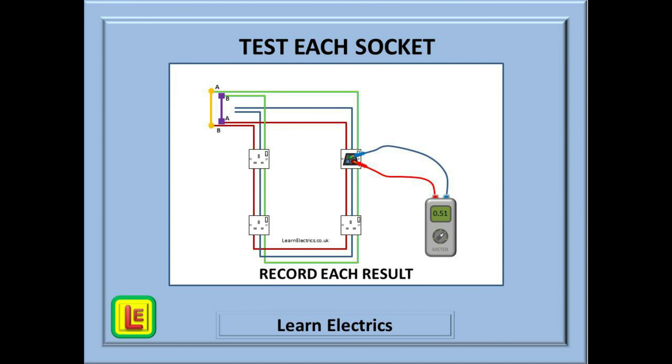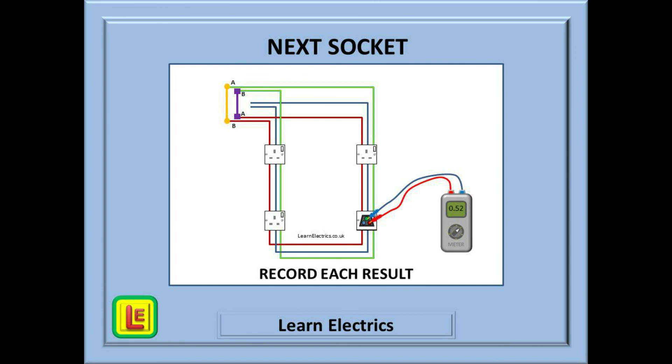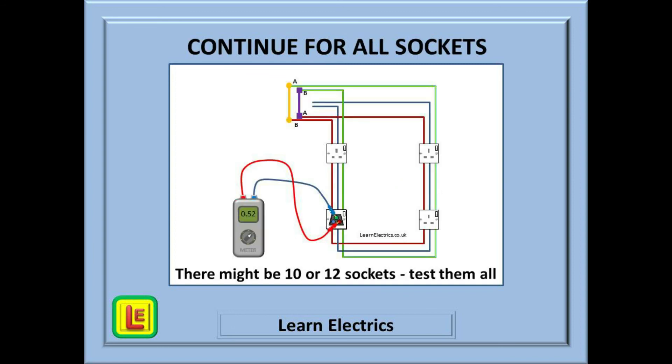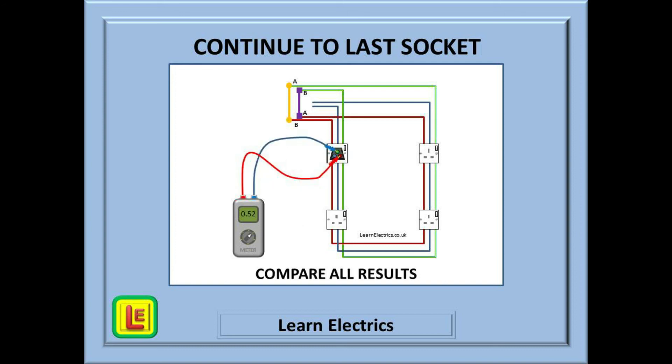Life now is easy. Test the resistance at each socket on the circuit. Make a note of each result because you will need these numbers soon. You should find that every socket is about the same value. There is always a very slight variation on every circuit. Continue for all sockets. There might be 10 or 12 sockets. Test them all. It is part of your job.